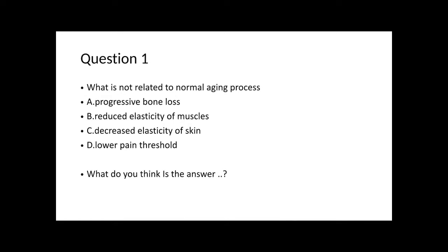Question number one from past papers: What is not related to the normal aging process? A) Progressive bone loss, B) Reduced elasticity of the muscles, C) Decreased elasticity of the skin, D) Lower pain threshold. Write your answer in the comments.